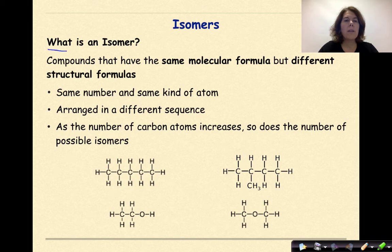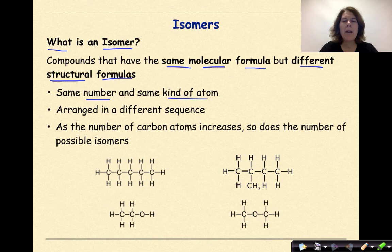So what is an isomer? Compounds that have the same molecular formula, but different structural formulas. So they have the same number and the same kind of atoms, but they are arranged in a different sequence. As the number of carbon atoms increases, so does the number of possible isomers.